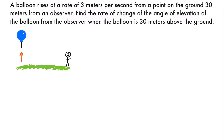How do we tackle this problem? The first thing you should always do when solving a related rates problem is draw a picture for your scenario. I've already got part of a picture drawn here, but it's not complete — we don't have anything labeled. We just have our balloon rising from the ground and our observer watching that balloon rise. So let's complete this diagram by labeling the different variables in this scenario.